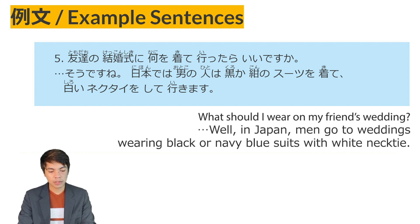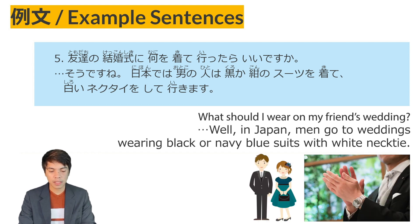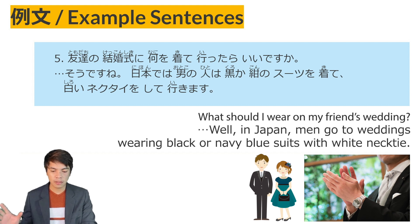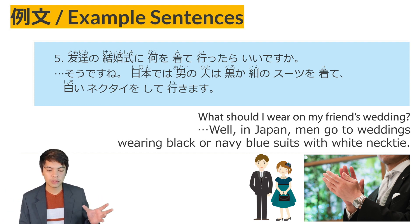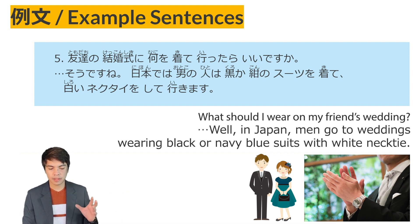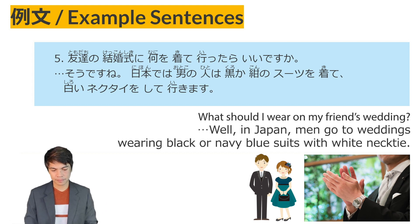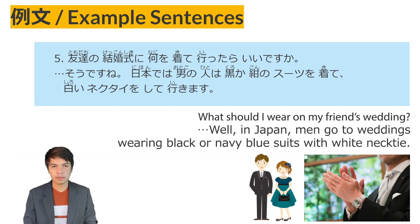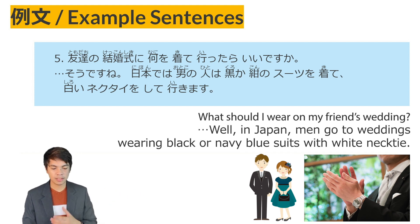Example sentence number five: Tomodachi no kekkon shiki ni nani o kite itara ii desu ka? Someone is asking what they should wear to a friend's wedding. In Japan, men wear black or navy blue — kuro ka kon no suutsu wo kite, they wear black or navy blue suits — shirai nekutai o shite ikimasu, they put on a white necktie and go.